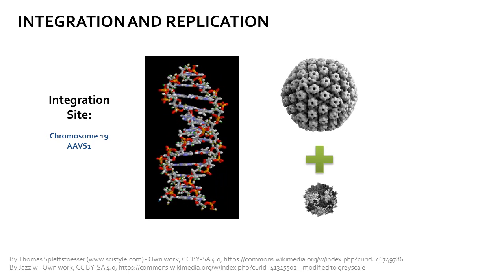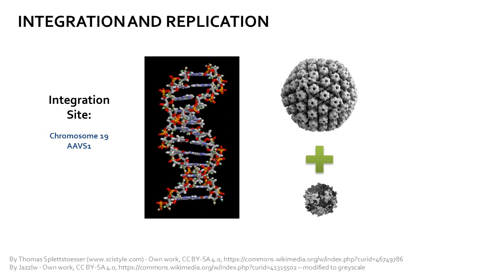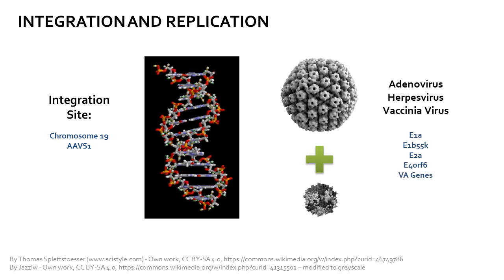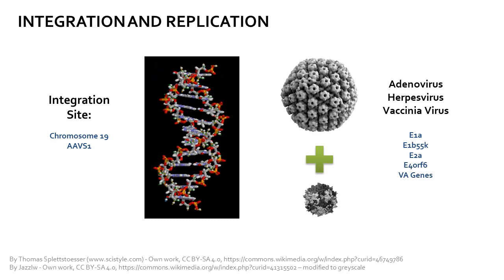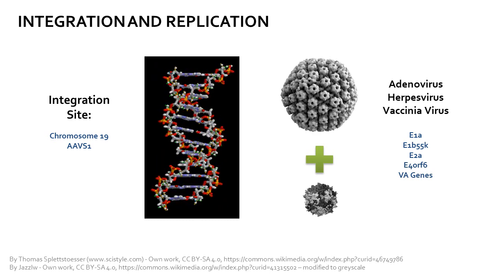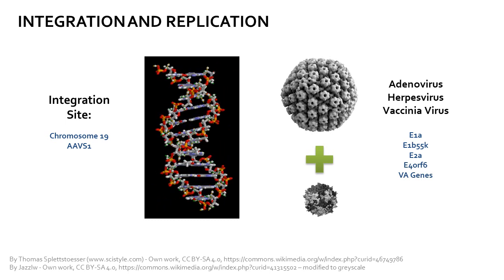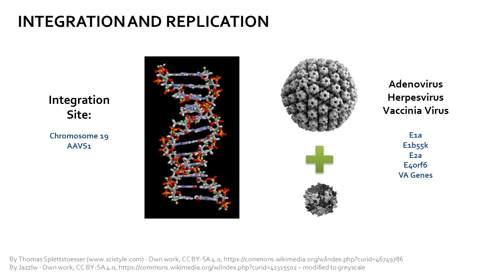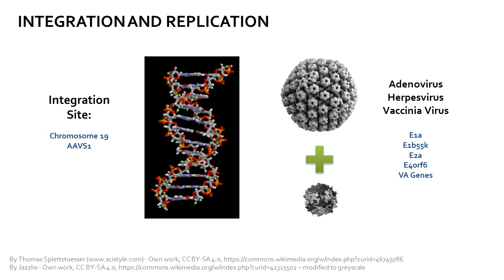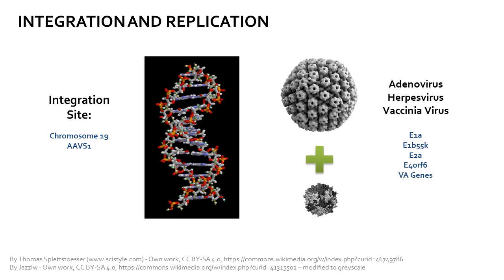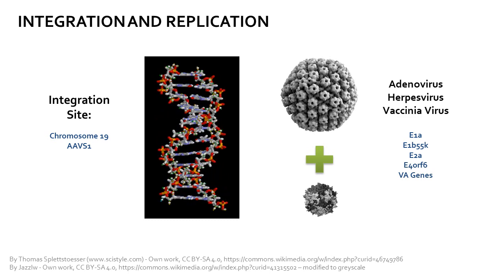Some of the helper viruses known to afford the AAV its full replication cycle are adenoviruses, herpesviruses, and the vaccinia virus. For adenoviruses specifically, the genes required to provide the full replication cycle are E1A, E1B55K, E2A, E4ORF6, and VA genes. Modern production techniques exploit this property by adding various components in cis and in trans in order to manufacture the AAV with relatively high efficiency.